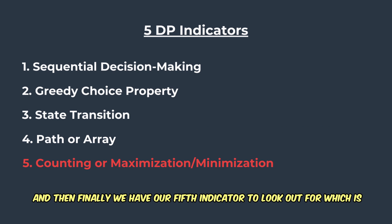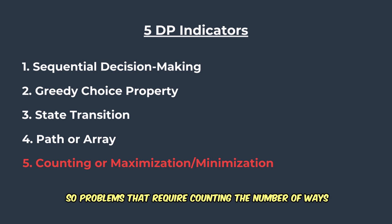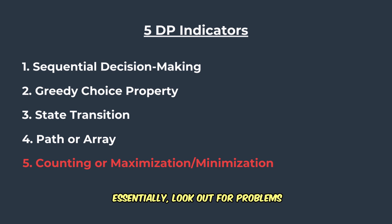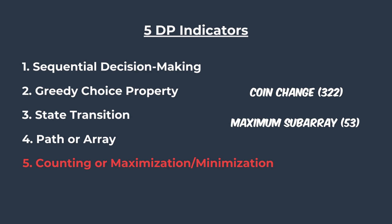Finally, we have our fifth indicator: counting or maximization/minimization. Problems that require counting the number of ways to achieve a goal, or maximizing or minimizing a value, frequently involve dynamic programming. Look out for problems framed as counting or optimization tasks. Some notable examples on LeetCode are the Coin Change problem and the Maximum Subarray problem.